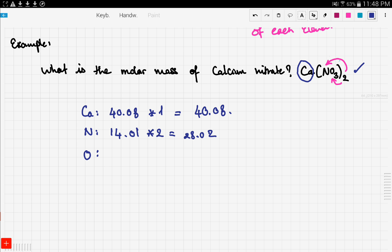Now lastly we have oxygen. And the molar mass of oxygen is 16.00 times 6. Because we have six oxygens. And we're left with 96.00.